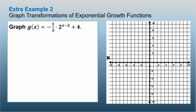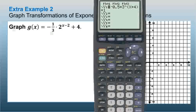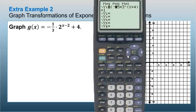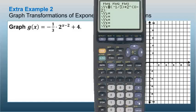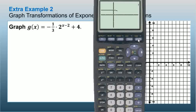Next, graph the transformation of this exponential growth function. We'll do the same thing — put it in our calculator to find a table of values. In y equals, we enter (−1/3) times 2 raised to the (x − 2) power, then plus 4. Hit graph to see the graph, then go to the second graph for the table of values.